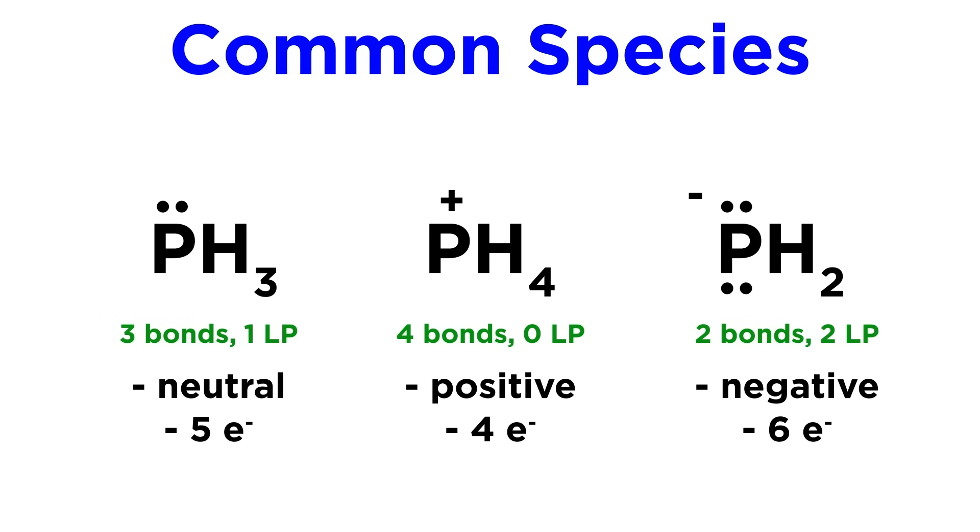And then phosphorus is an analog of nitrogen, and we will sometimes see a phosphorus cation when it is making four bonds to other atoms.